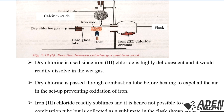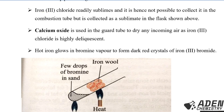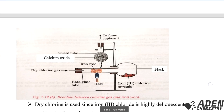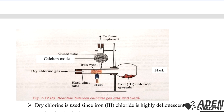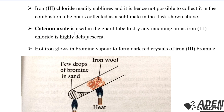The advantage of removing the air is to prevent iron from reacting with the oxygen originally in the combustion tube to form iron(II) oxide when heated. Also, iron(III) chloride readily sublimes and therefore cannot be collected in the combustion tube; it is instead collected as a sublimate in the flask shown in the diagram.